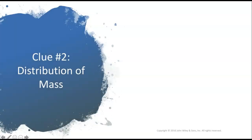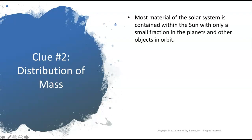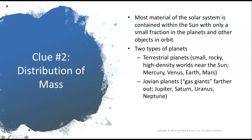All planets orbit in the same direction around the sun, which is the same direction the sun rotates on its axis. They orbit in the same plane, like marbles rolling around on a single flat dish. Most planets and moons rotate on their axis in the same direction as the planets orbit the sun. The second clue is the distribution of mass: most material is contained within the sun, with only a small fraction in the planets and other orbiting objects. There are two types of planets — terrestrial planets, which are the small, rocky, high-density worlds closest to the sun: Mercury, Venus, Earth, and Mars.